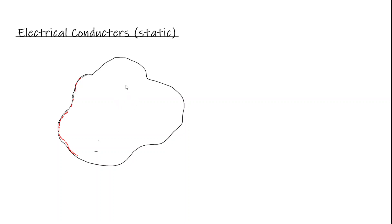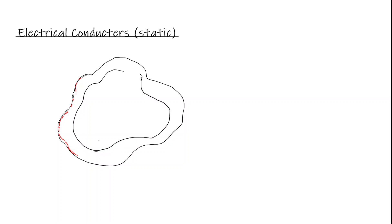We've now talked about how charges distribute themselves on electrical conductors and where the equipotential is. Let's consider one more special case — a hollow conductor. If the conductor is hollow with air inside, and we place a bunch of positive charges on it, how do those charges distribute themselves?